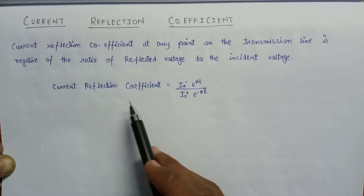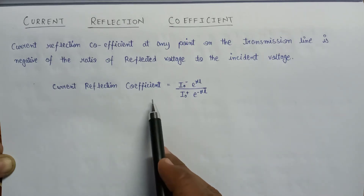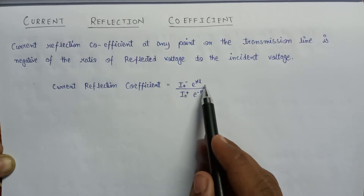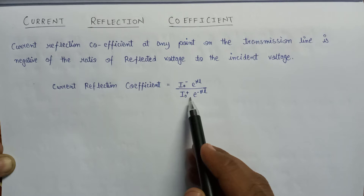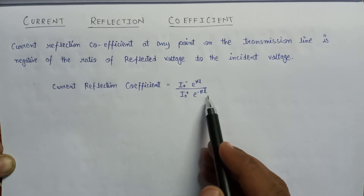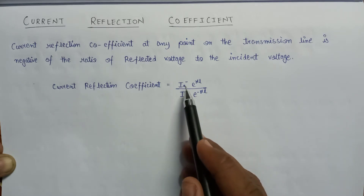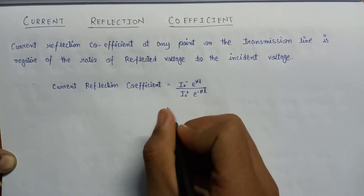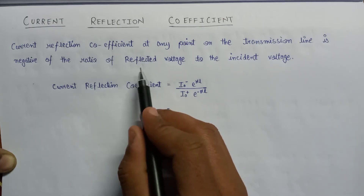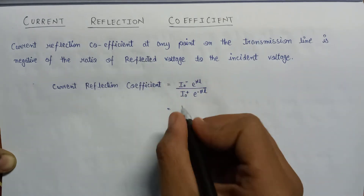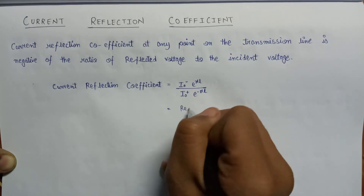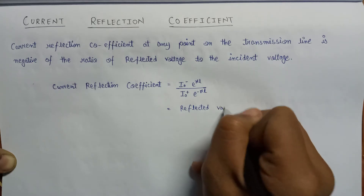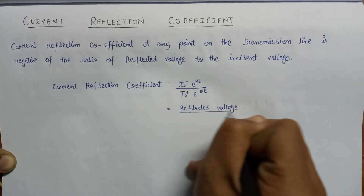The expression for the current reflection coefficient equals I0 minus e to the power gamma L over I0 plus e to the power minus gamma L, in terms of I0 and I plus. The simplified formula for the current reflection coefficient equals the reflected voltage to the incident voltage.